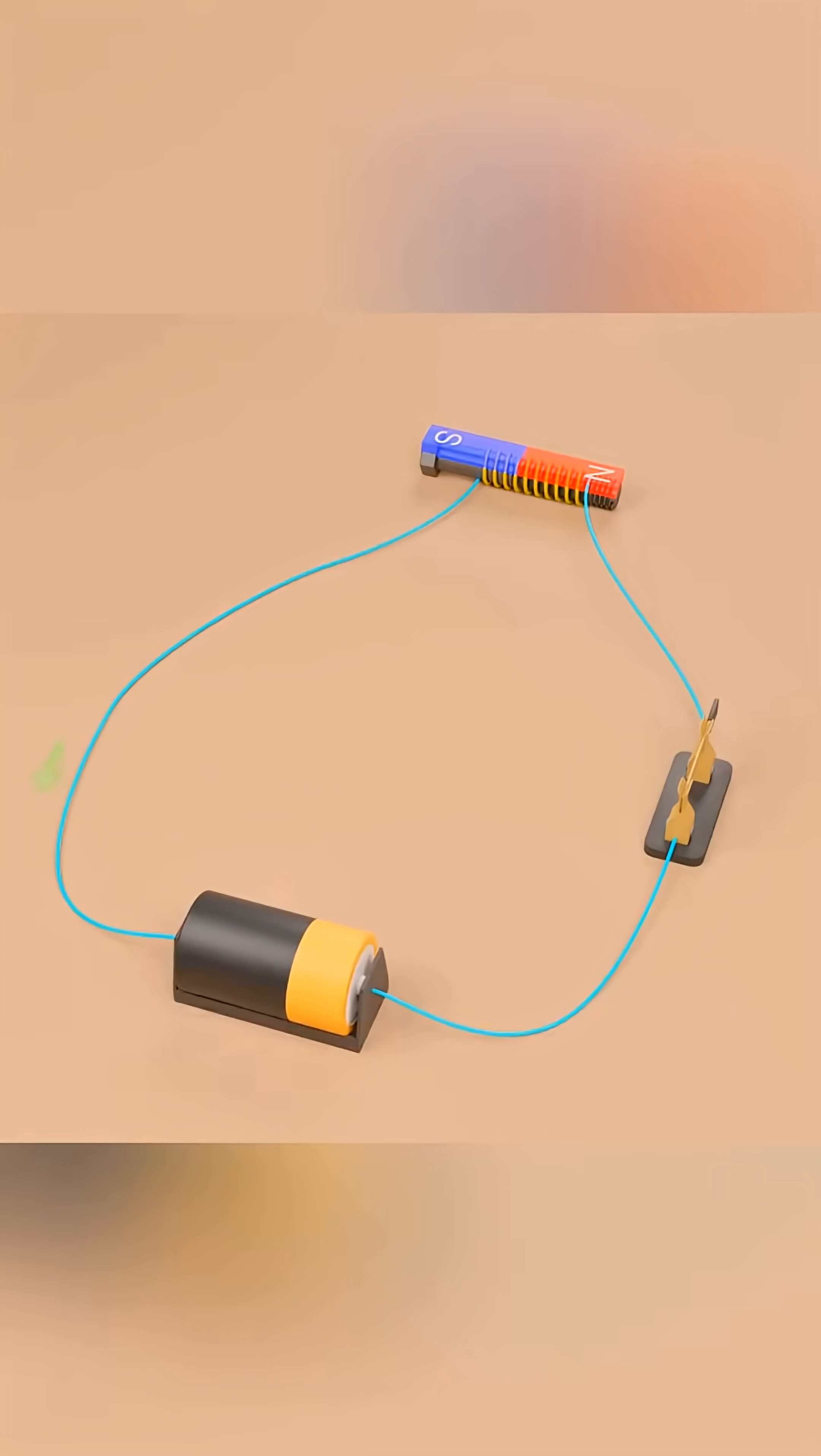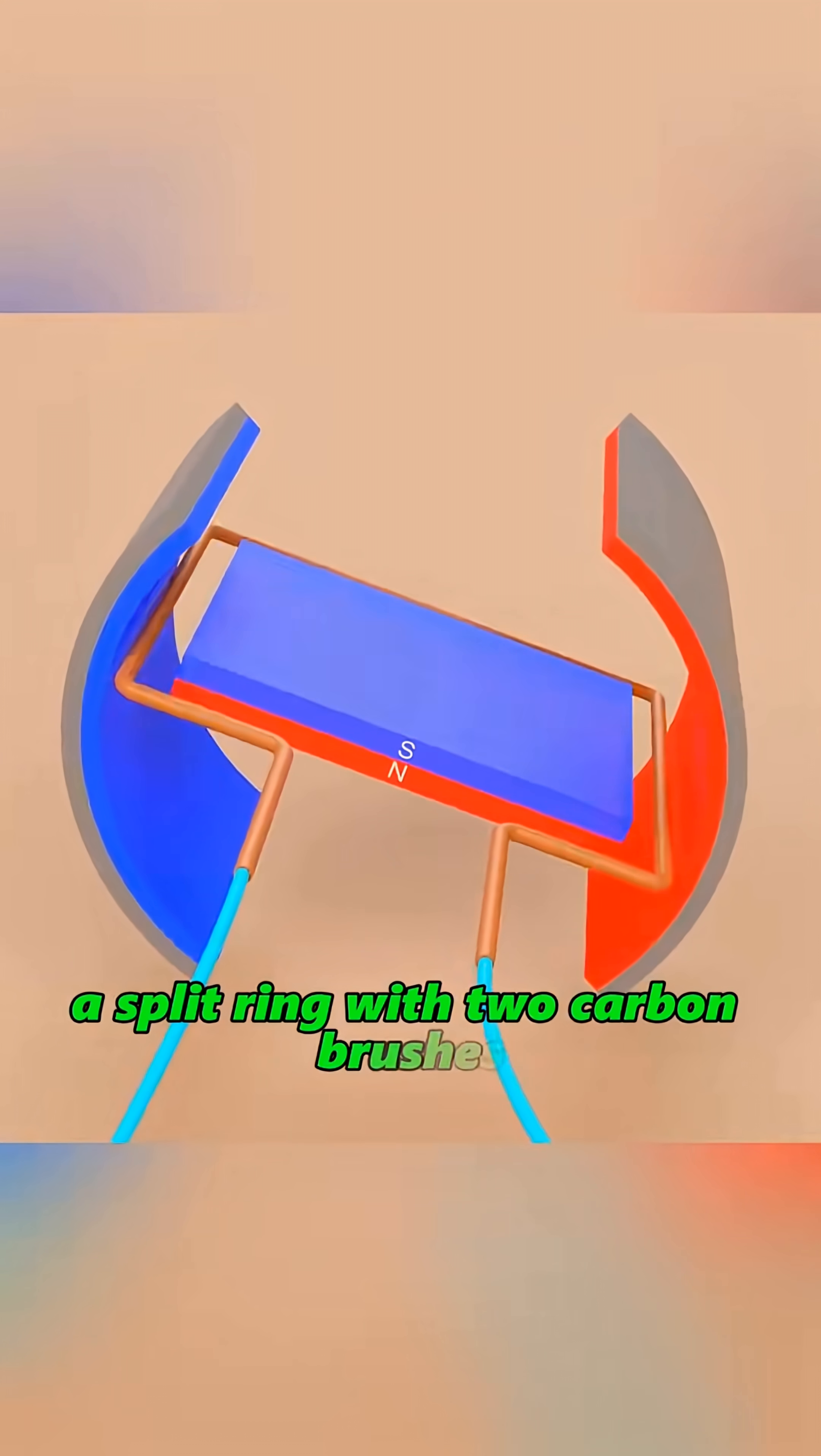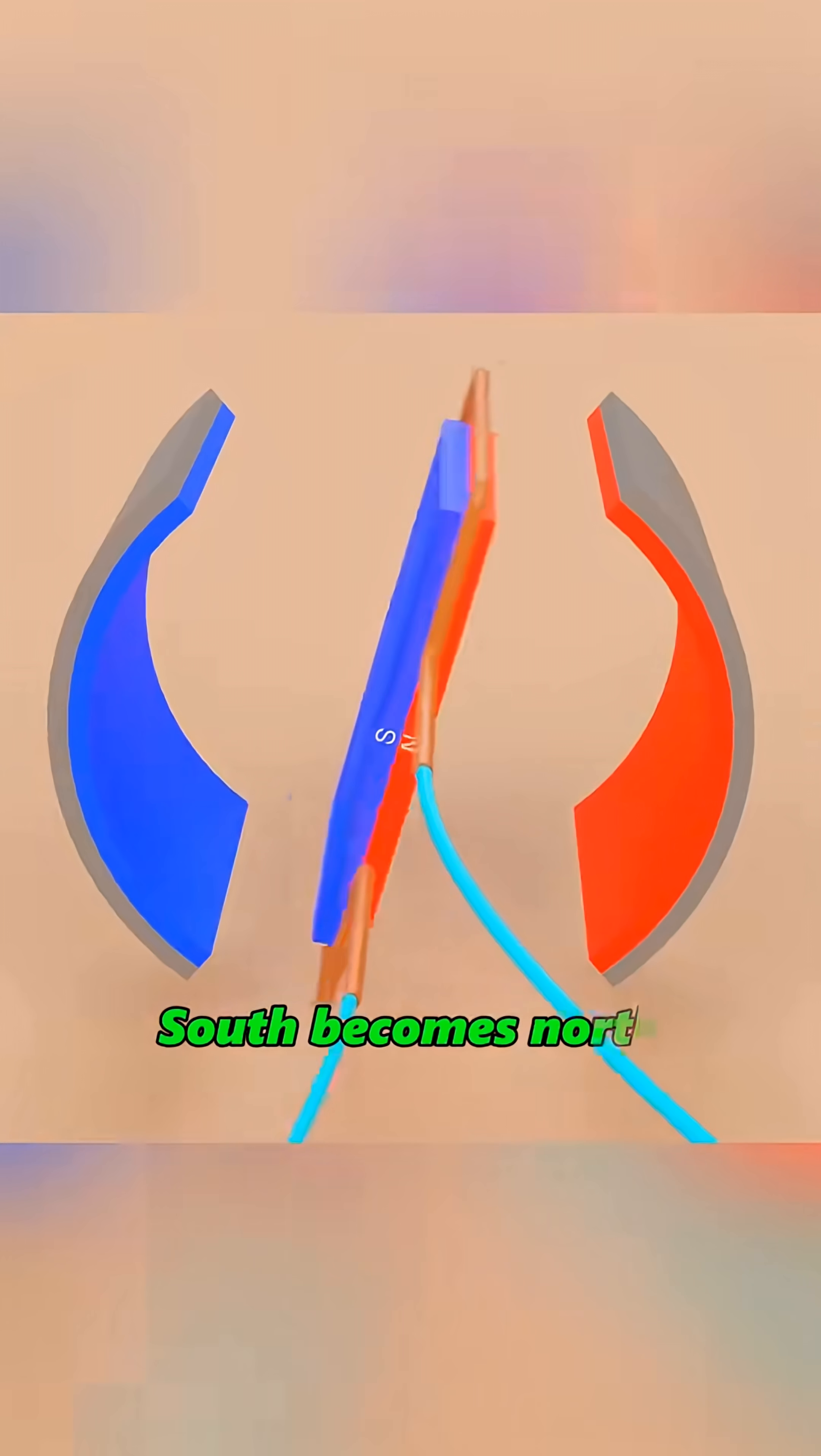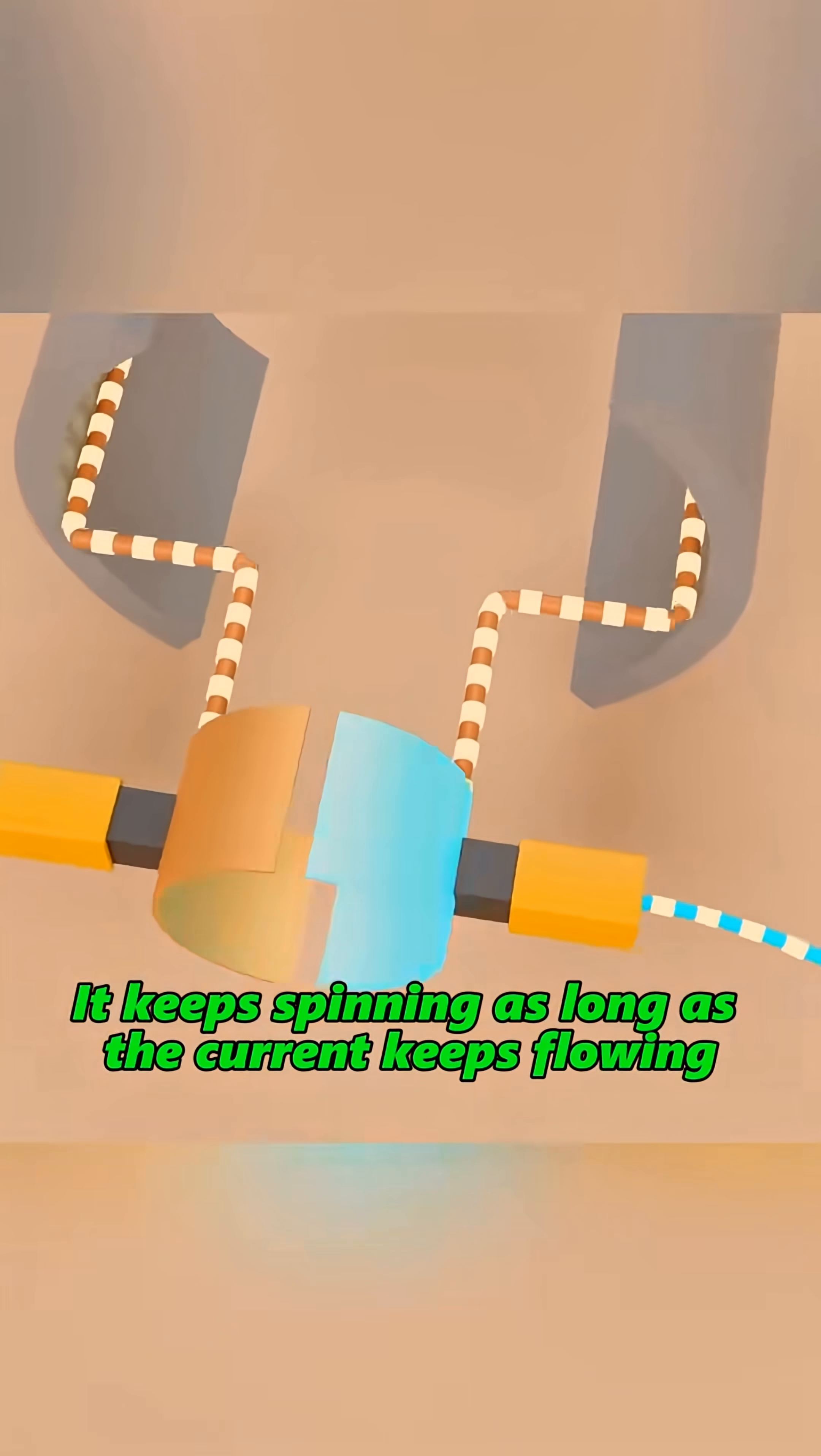We flip the poles at the exact right moment. We reverse everything. That's what the commutator does - a split ring with two carbon brushes. At precisely the right instant, positive becomes negative, negative becomes positive, north becomes south, south becomes north. The rotor gets push-pulled and dragged forward. It keeps spinning as long as the current keeps flowing.